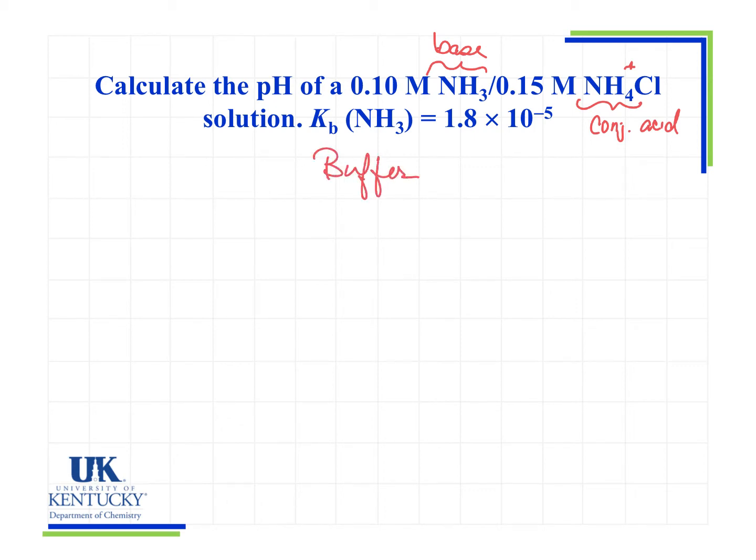And any time we want to calculate the pH of a buffer, we should use the Henderson-Hasselbalch equation. pH equals pKa plus the log of the concentration of base over the concentration of acid. Now students sometimes want to do something different if we've got a base buffer rather than an acid buffer, but we still use exactly this equation.